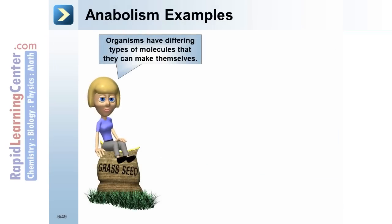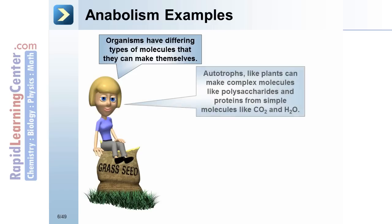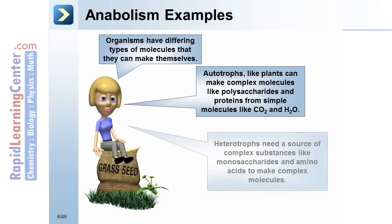Anabolism examples. Organisms have differing types of molecules that they can make themselves. Autotrophs, like plants, can make complex molecules like polysaccharides and proteins from simple molecules like carbon dioxide and water. Heterotrophs need to have a source of complex substances like monosaccharides and amino acids to make complex molecules.